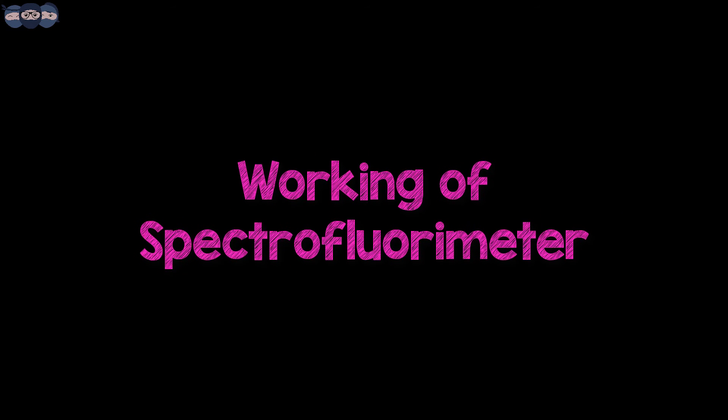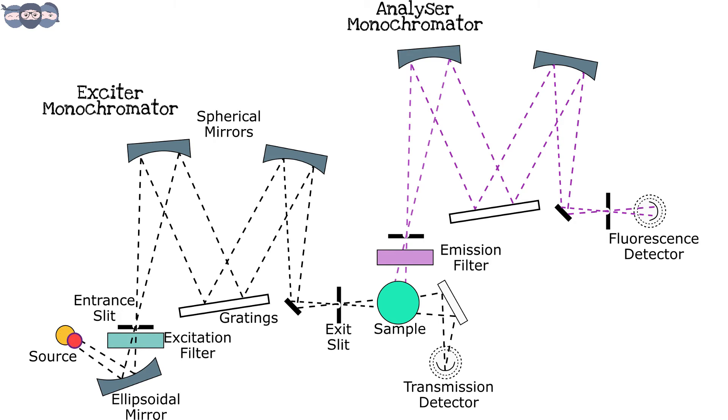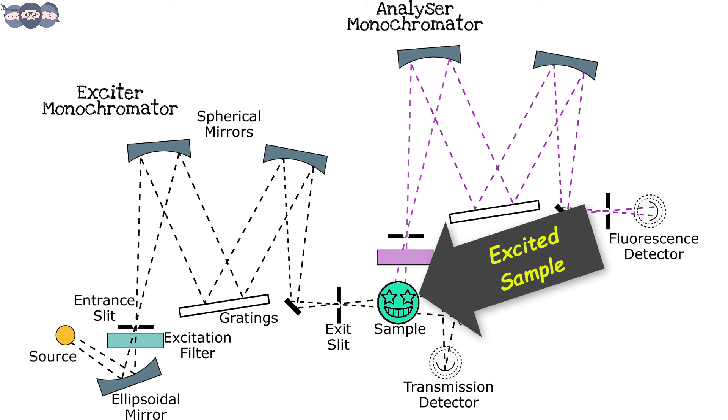Coming to working, we can see that the light from the light source passes through an exciter monochromator. Here only the required wavelength of light passes through the exit slit. This incident light is absorbed by the sample or the analyte. The remaining light gets transmitted and falls on the transmission detector.